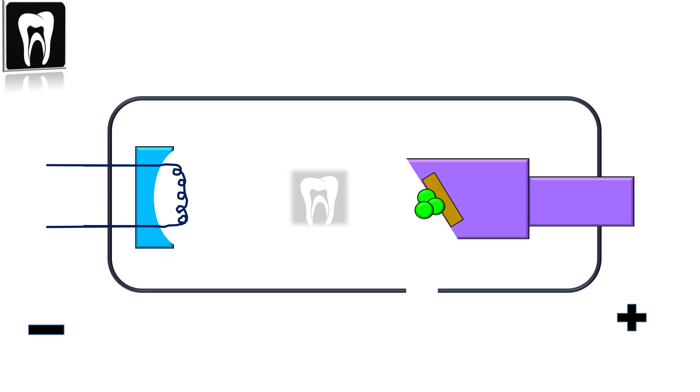The positive terminal of the X-ray tube is called the anode. Remember that it attracts the negative electrons—the anode must be positive to attract them. The anode consists of a tungsten target, and we have a copper stem in the anode that allows heat dissipation.